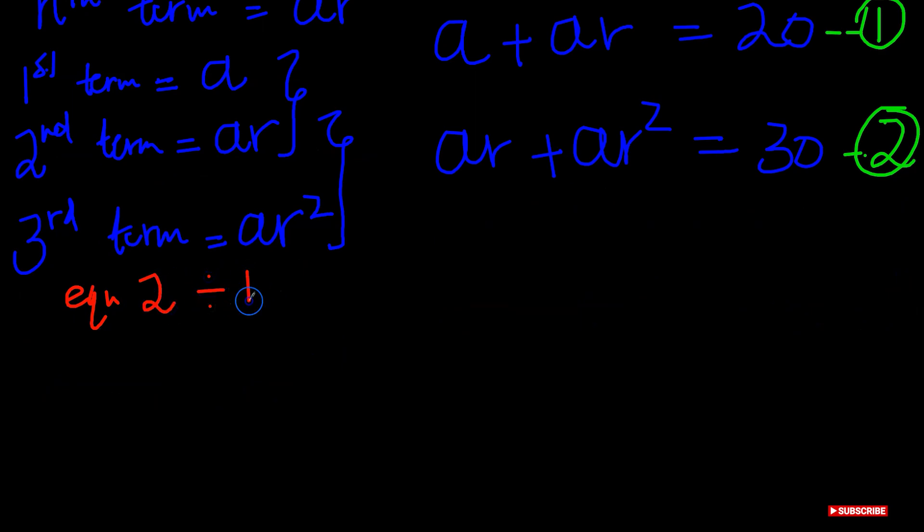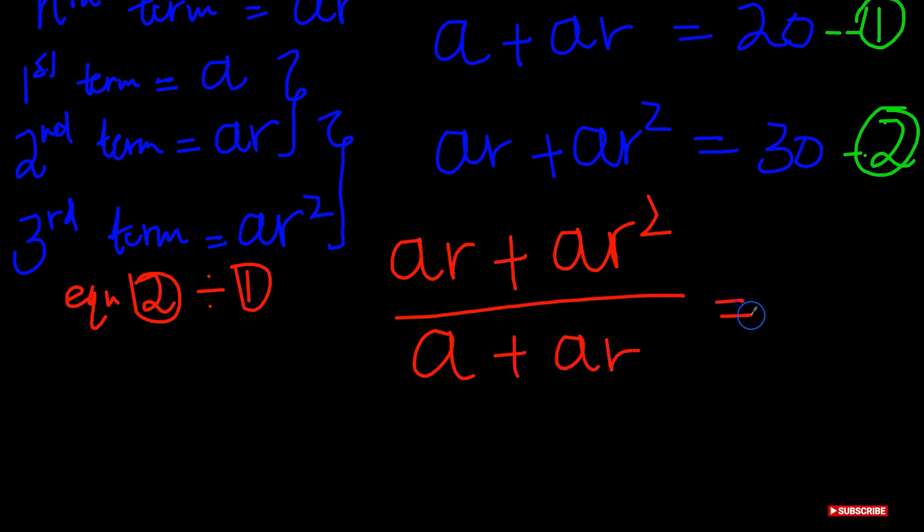What do we get? We have ar plus ar squared divided by equation one, which is a plus ar. And this is going to give you 30 over 20.